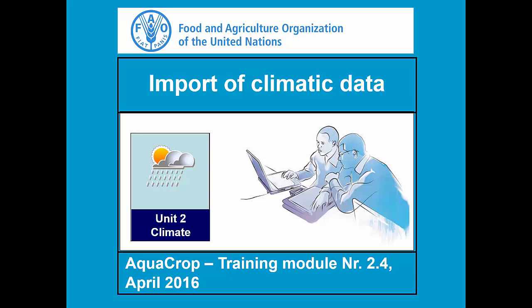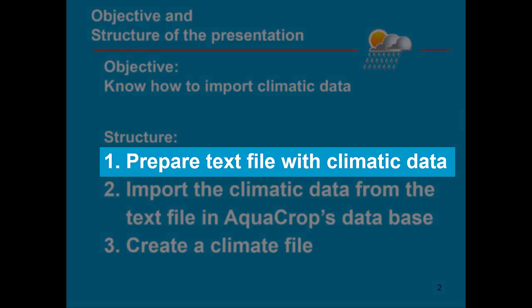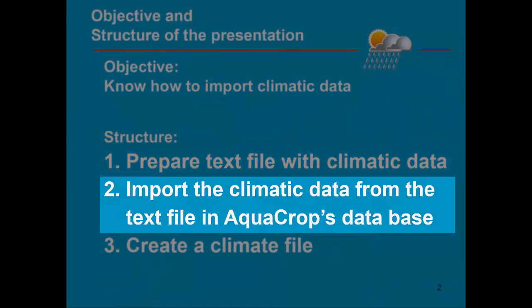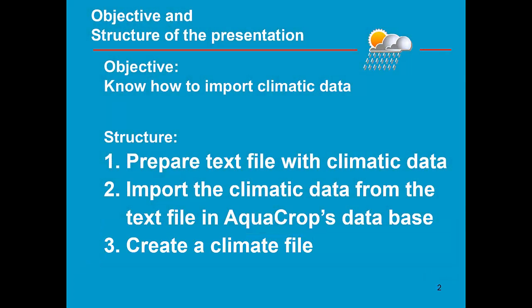Training module 2.4: Import of climatic data. The importing of climatic data consists in preparing a text file with climatic data, subsequently importing that climatic data in AquaCrop's database, and finally in creating a climate file.